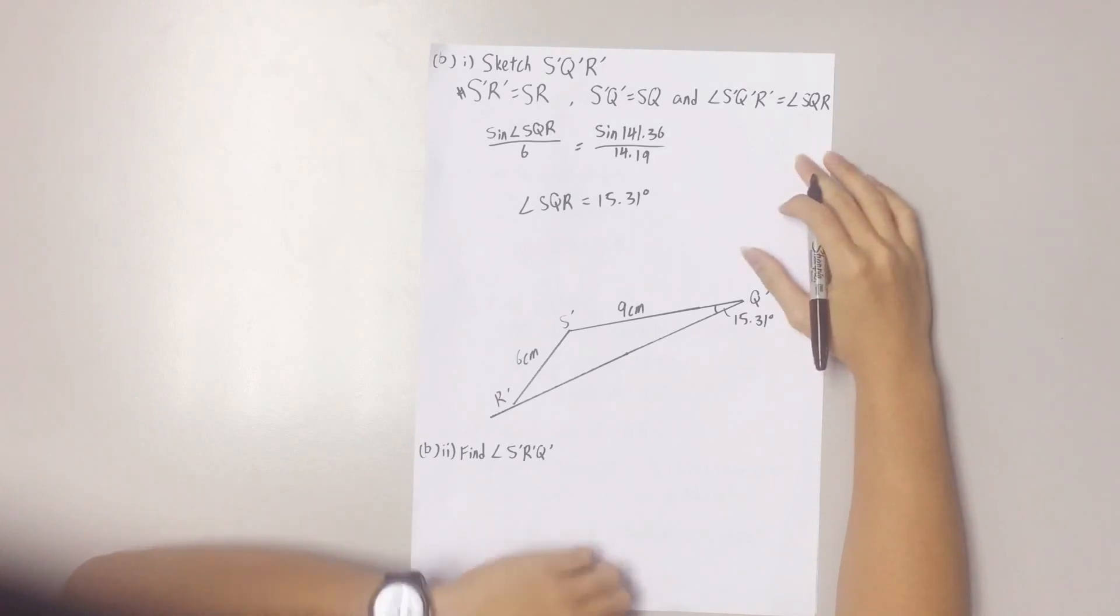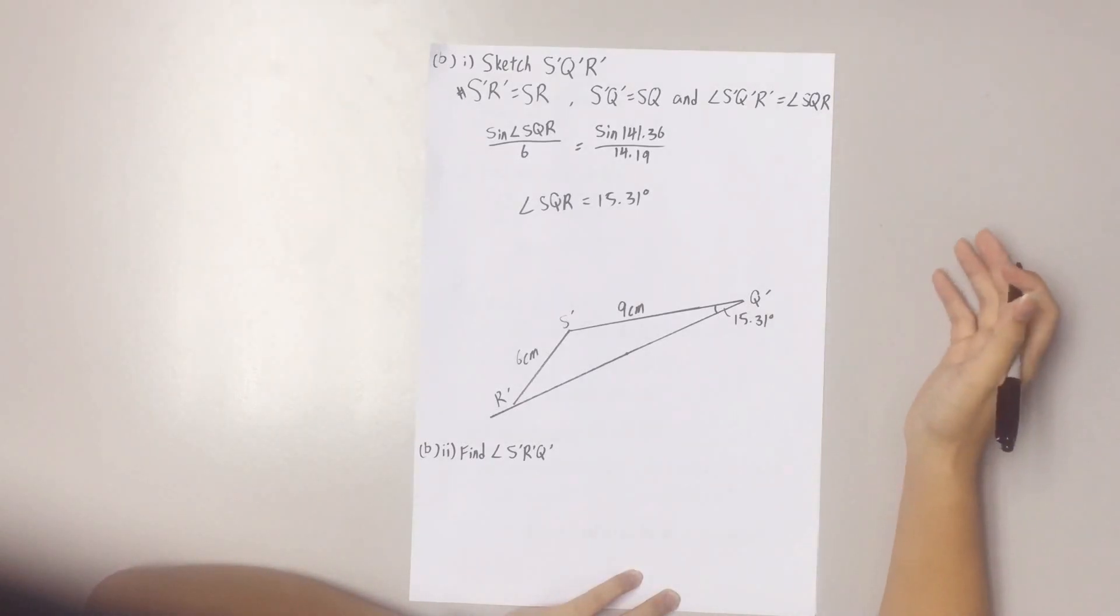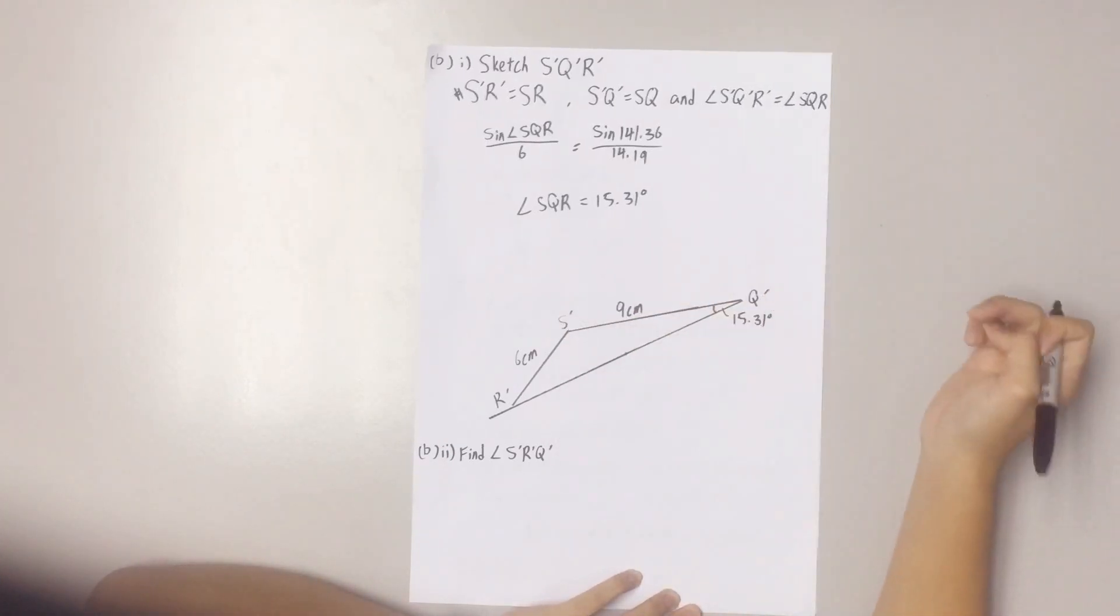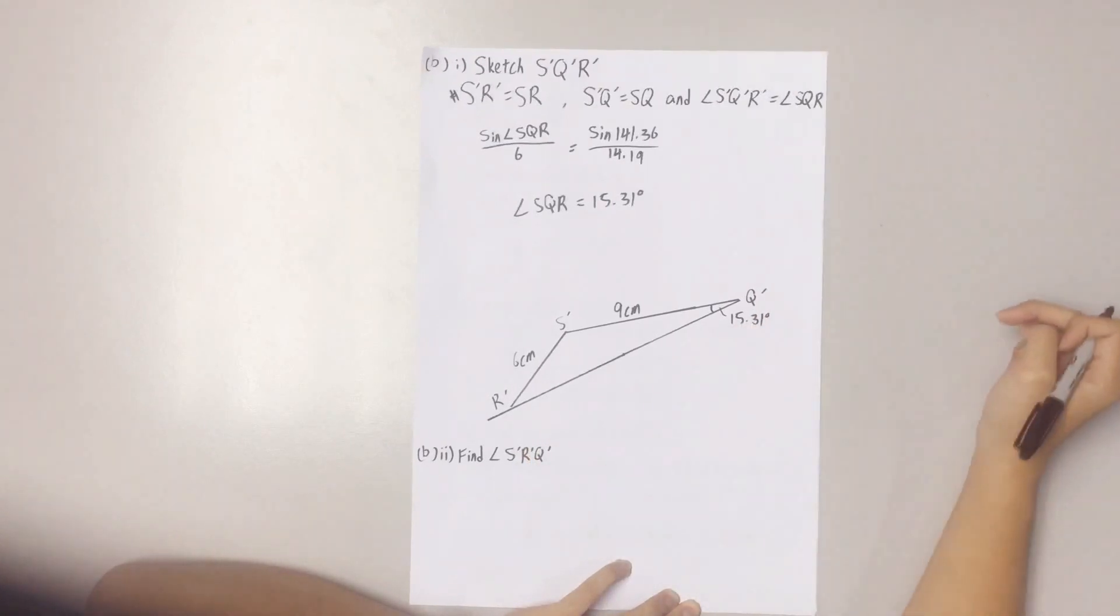Now, since we already have gotten this angle, we can start drawing the triangle. As you can see, I've already drawn this, but you need to draw it using a ruler and a protractor. Make sure that S' and Q' are 9 cm apart, S'R' are 6 cm apart, and the angle S'Q'R' is 15.31 degrees or 15 degrees.